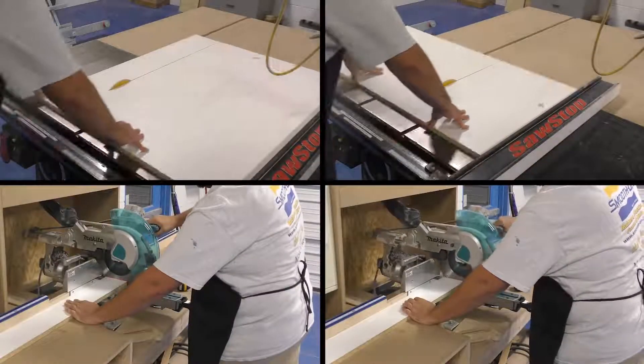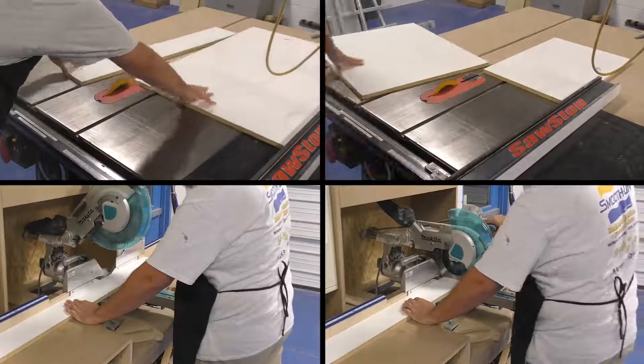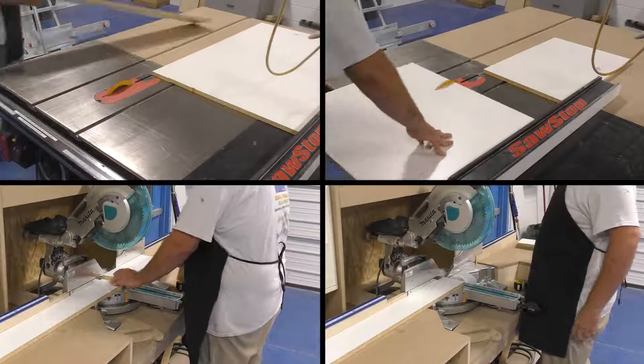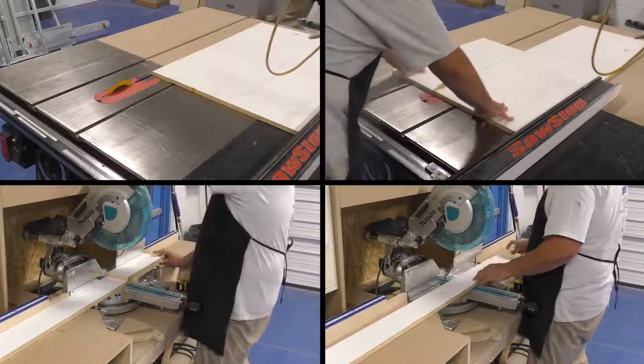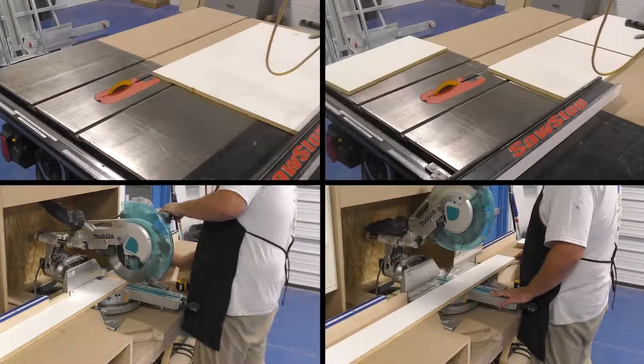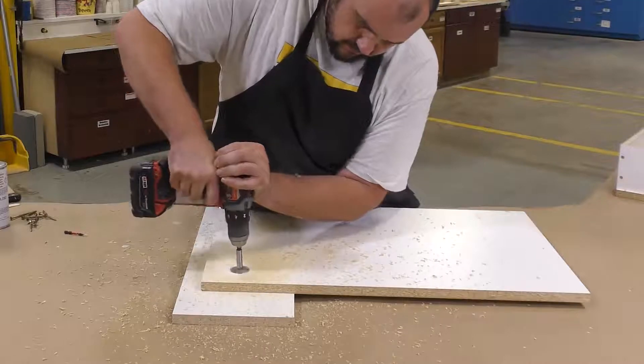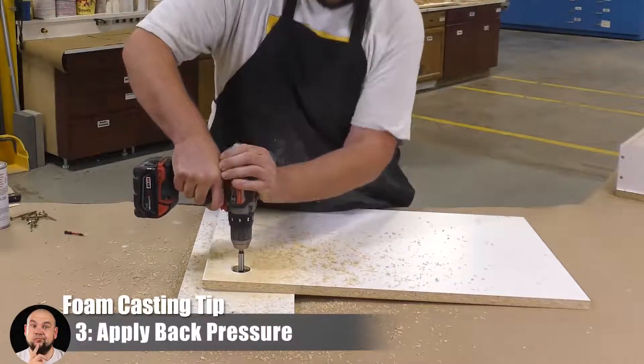To construct the actual mold box, I'm going to cut some melamine board. I already pre-measured these out and I'm cutting them to the right sizes that I need. In order to get a really nice finish on our casting, it is important to use a back pressure plate and that's what we're making here.